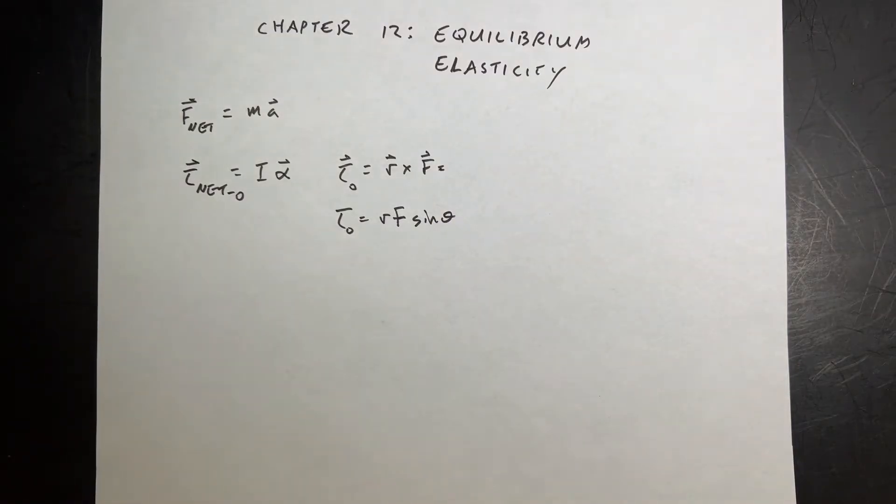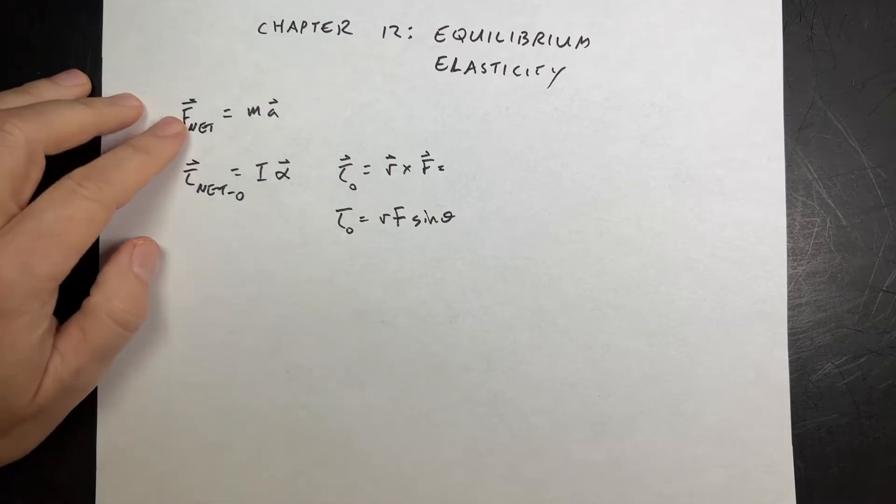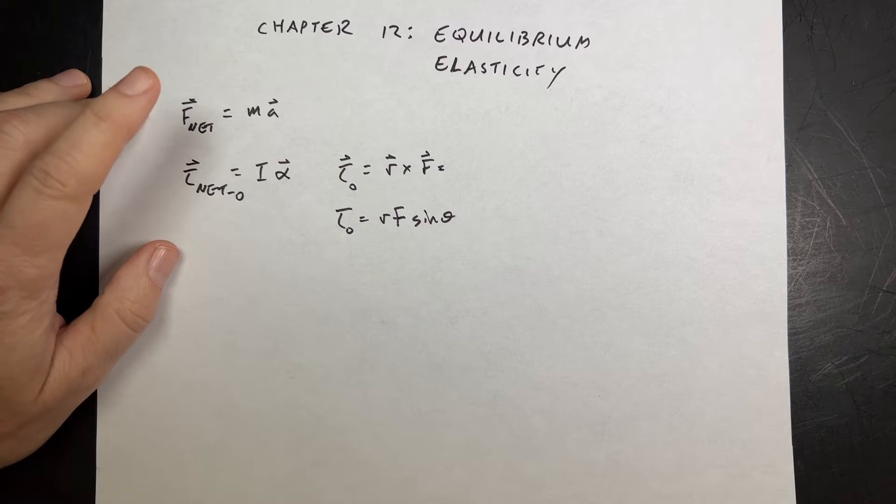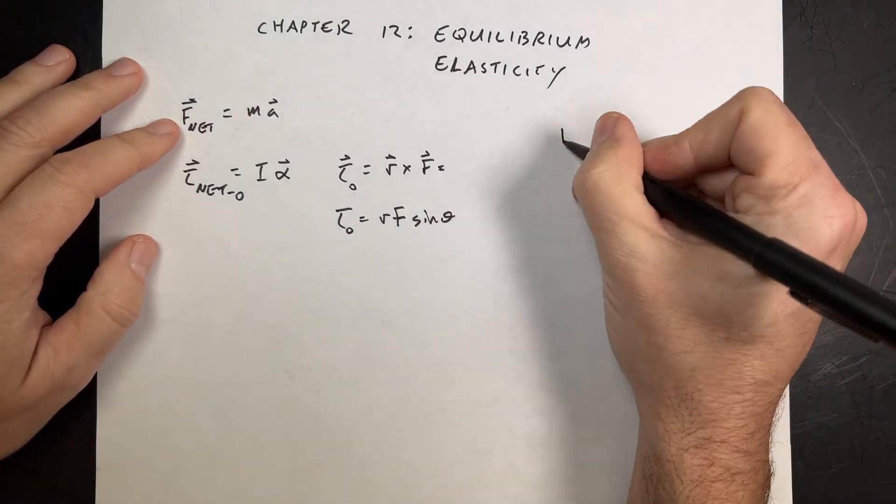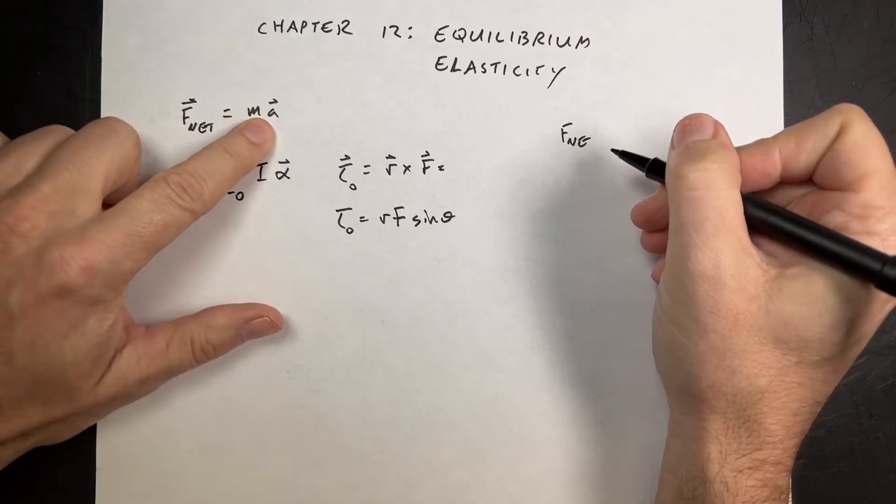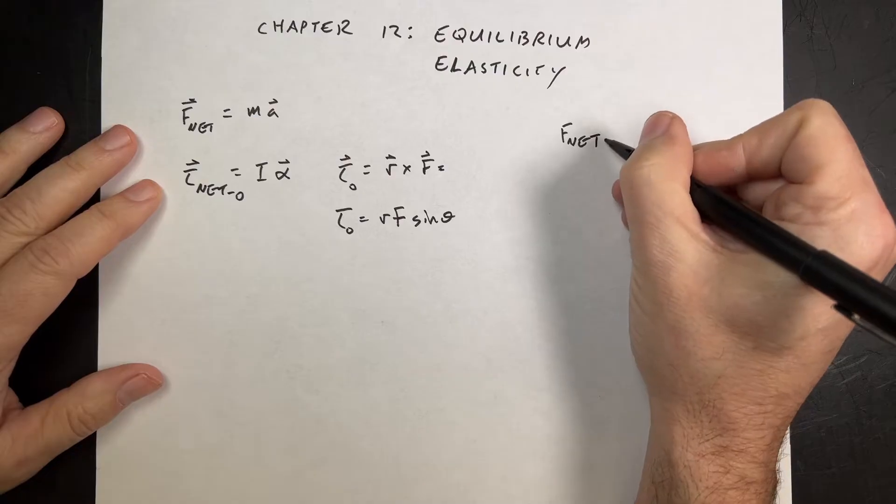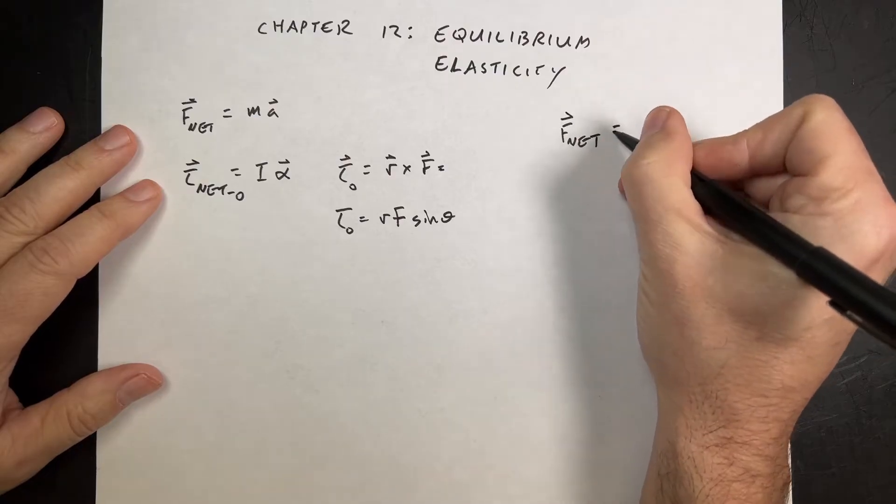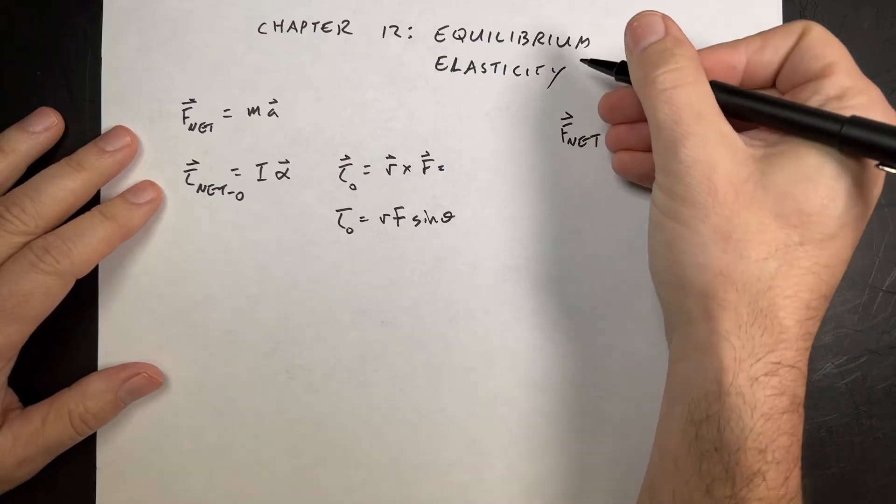In the special case we looked at before originally, net force is mass times acceleration. In the case where the net force is zero, we call that equilibrium. F net equilibrium means that the acceleration is zero. It could be moving, but the acceleration is zero. F net equals zero. This is equilibrium.